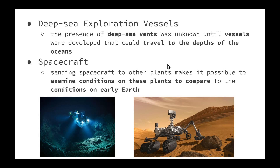Deep sea exploration vessels have also contributed. The presence of deep sea vents was unknown until certain vessels were able to travel to the depths of the ocean. Once this occurred, it was discovered that many unknown organisms were living on and in the vents, using the energy from the vents as a basis for an ecosystem. Regarding spacecraft, there is the theory of panspermia, where it is believed that the molecules necessary for life came from space. Sending spacecraft to other planets makes it possible to examine conditions on these planets and compare them to conditions on early Earth, to see whether panspermia is a plausible theory.